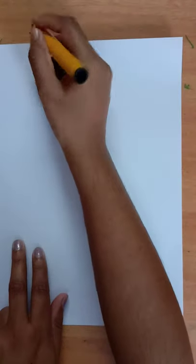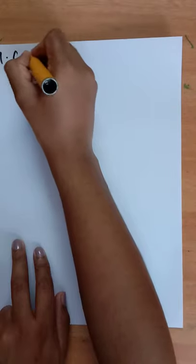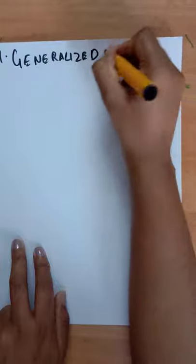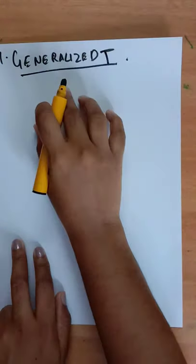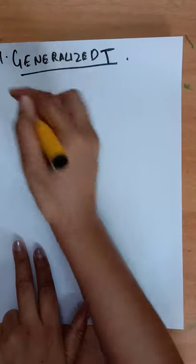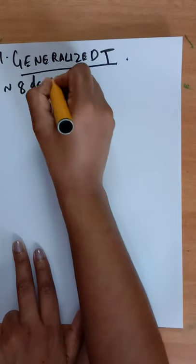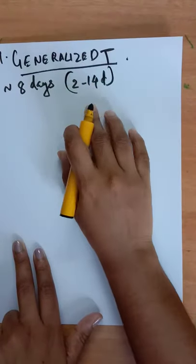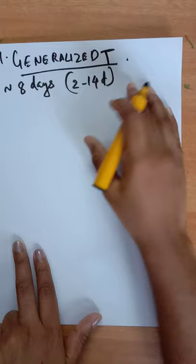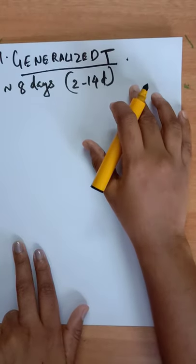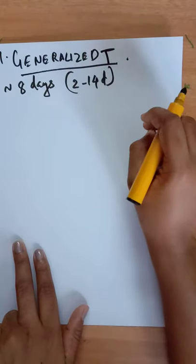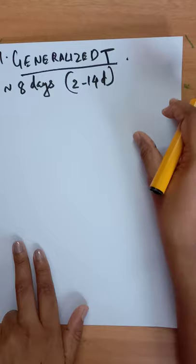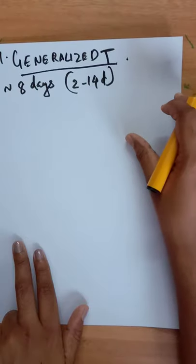First, about generalized tetanus. It has an incubation period of approximately eight days, ranging from 2 to 14 days, but the disease may occur months after the initial injury. The incubation period depends on the distance of the site of injury from the central nervous system. The faster the onset of symptoms, the poorer the prognosis.